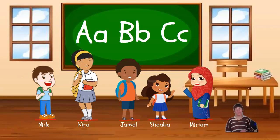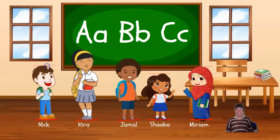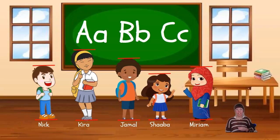To measure height, we always start at the bottom. So when we're measuring a person's height, we start at their feet. Then we measure from the bottom of their feet all the way up to the top of their head. That tells us their height. And when we compare somebody's height to somebody else's height, we can see who is shorter.